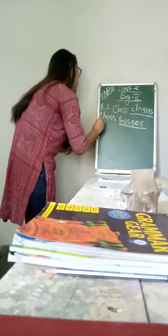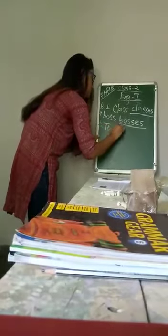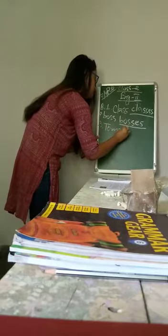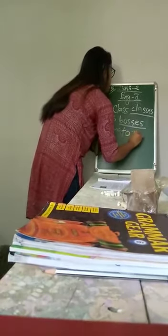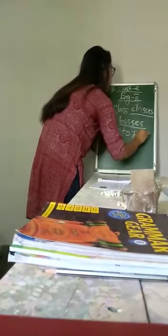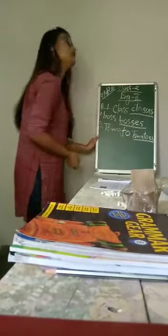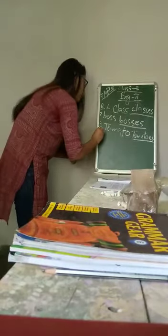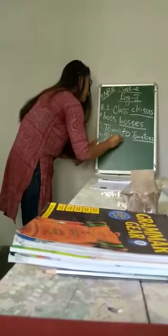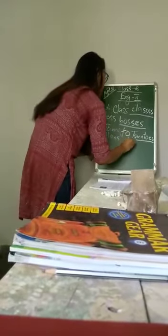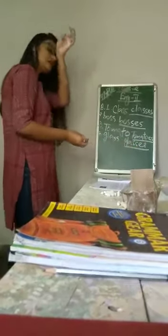Then we have tomato. Tomato will be tomatoes — O, E, S. We learned that if a word ends with O, we add ES to make it plural. Number 4, we have glass again — that is double S — so we add ES to make it plural: glasses, double S, E, S — glasses is plural.